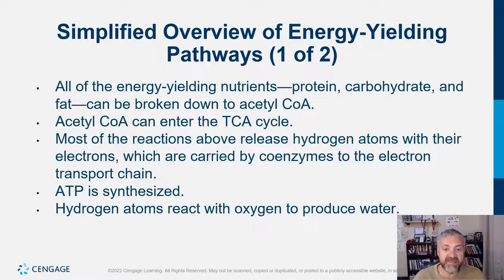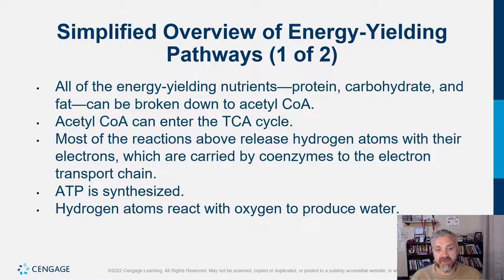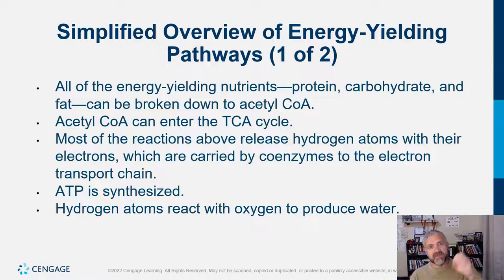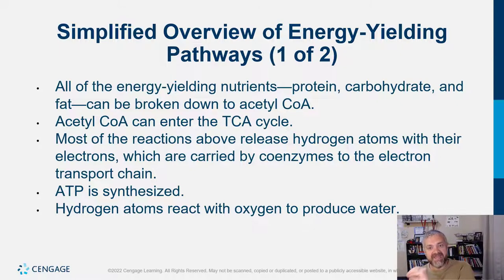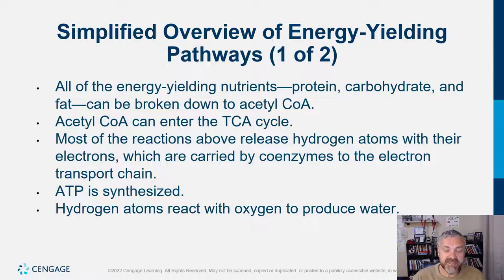ATP is synthesized primarily in the electron transport chain. Hydrogen atoms react with oxygen to produce water. So the equation of your metabolism is: glucose plus oxygen leads to carbon dioxide, water, and ATP. Carbon dioxide and water are waste products; ATP is the energy your body needs. If you take a typical glucose and fully oxidize it, you will turn that one glucose into 36 ATP — when dealing with eukaryotes like humans.